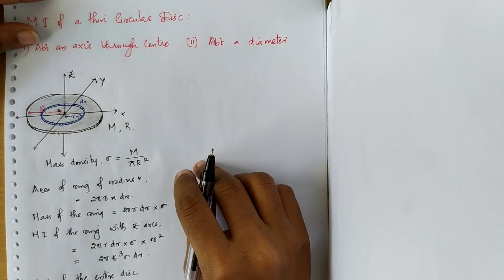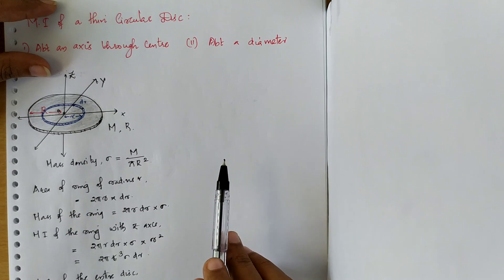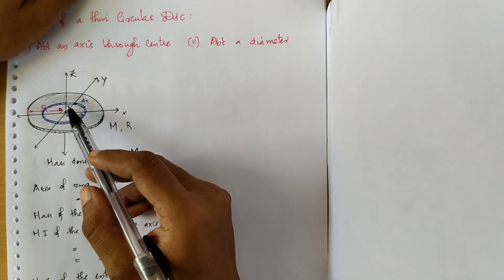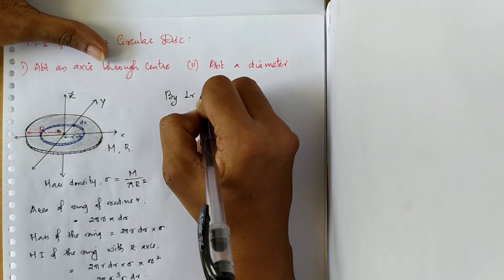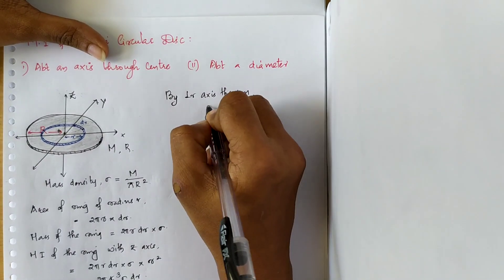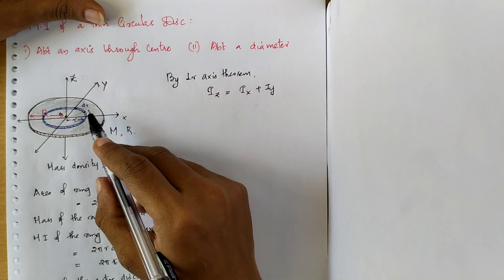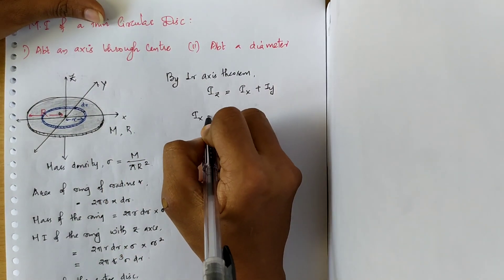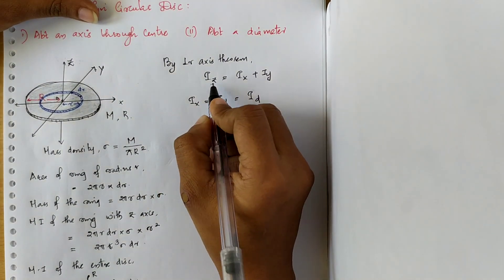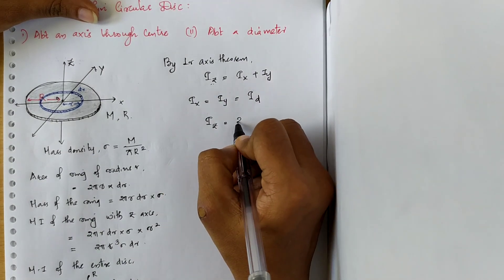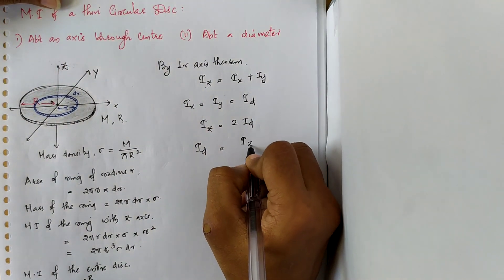Now to find the moment of inertia about the diameter — which can be either the X or Y axis since they both lie in the plane of the disc — we apply the perpendicular axis theorem, since Z is perpendicular to both. By the perpendicular axis theorem, IZ equals IX plus IY. For a uniform circular disc, IX equals IY, which we call ID (moment of inertia about the diameter). Therefore IZ equals 2·ID, so ID equals IZ divided by 2.